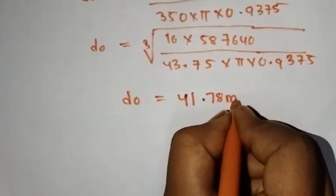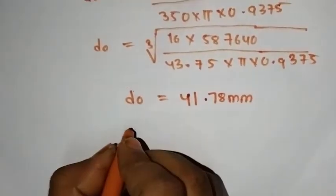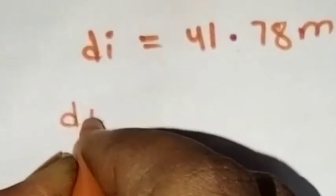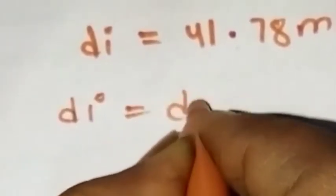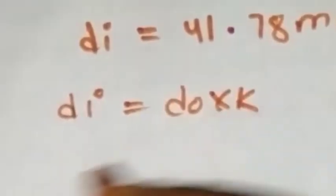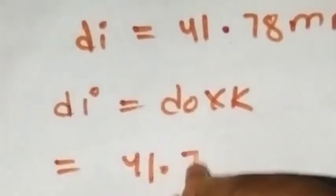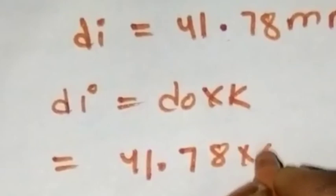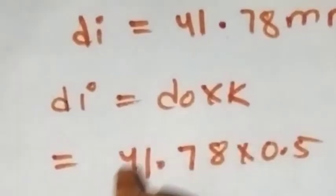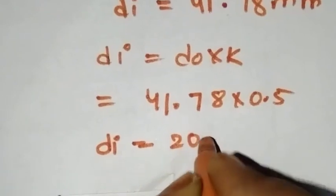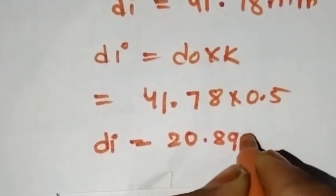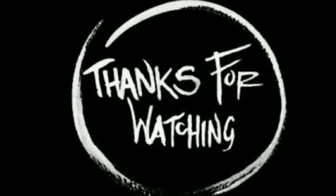D o is equal to 41.78 mm. D i is equal to d o into K, which is 41.78 into 0.5. D i equals 20.89 mm.